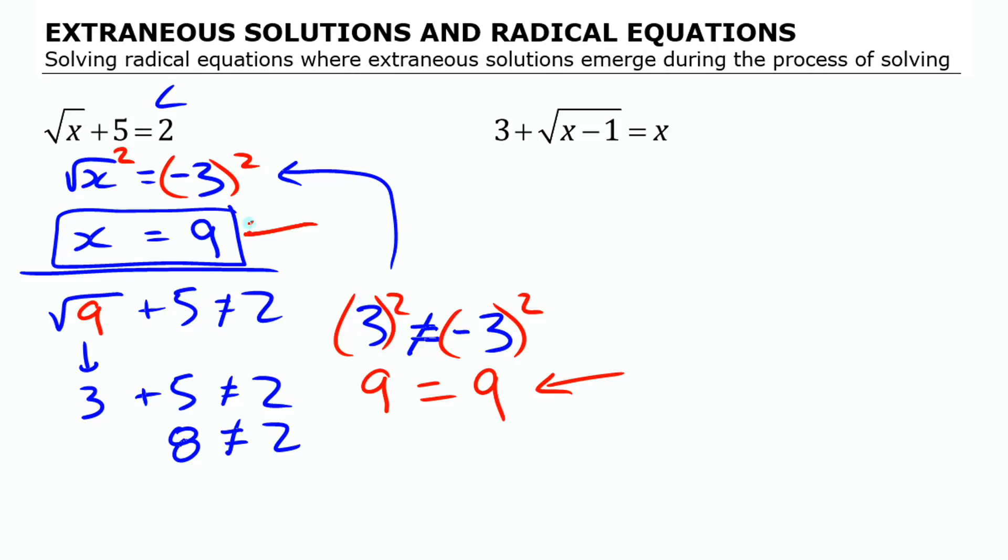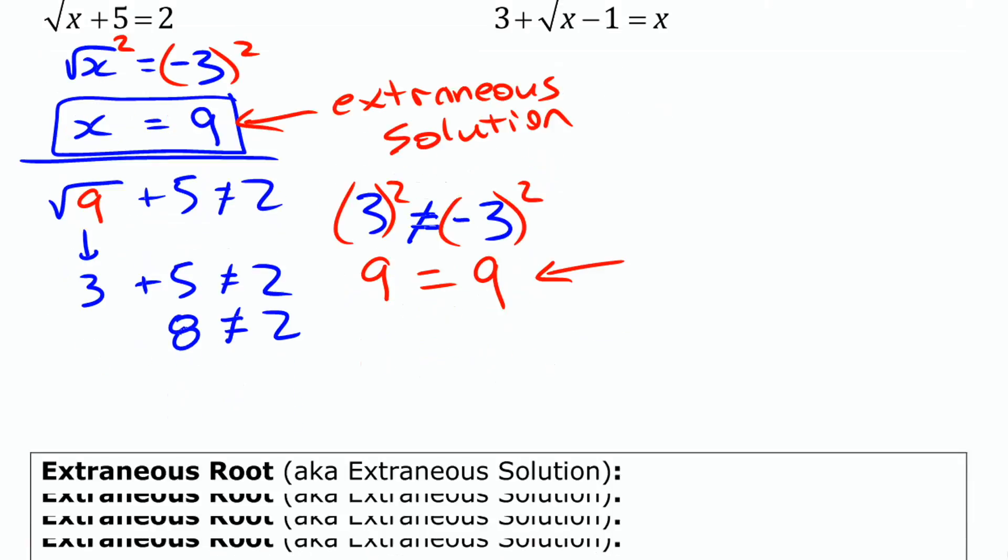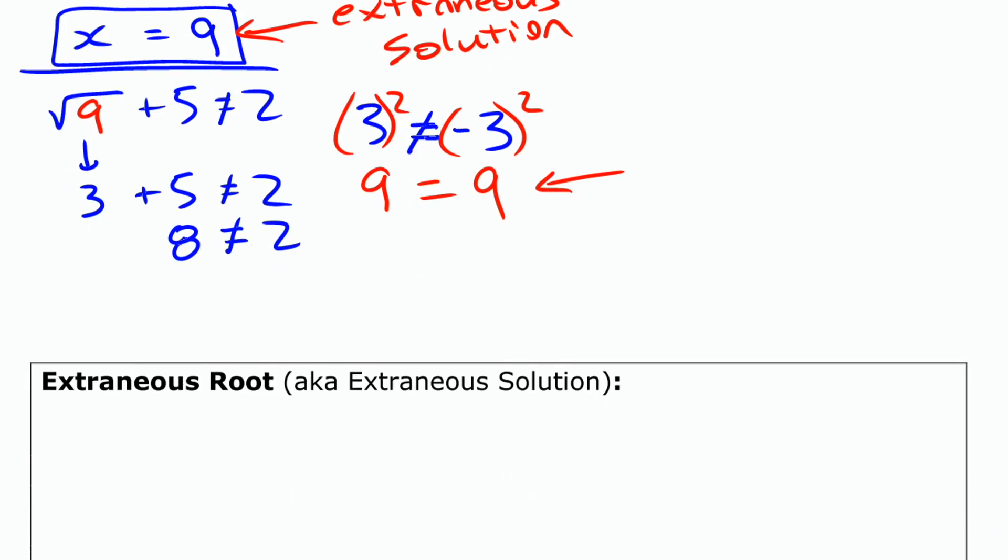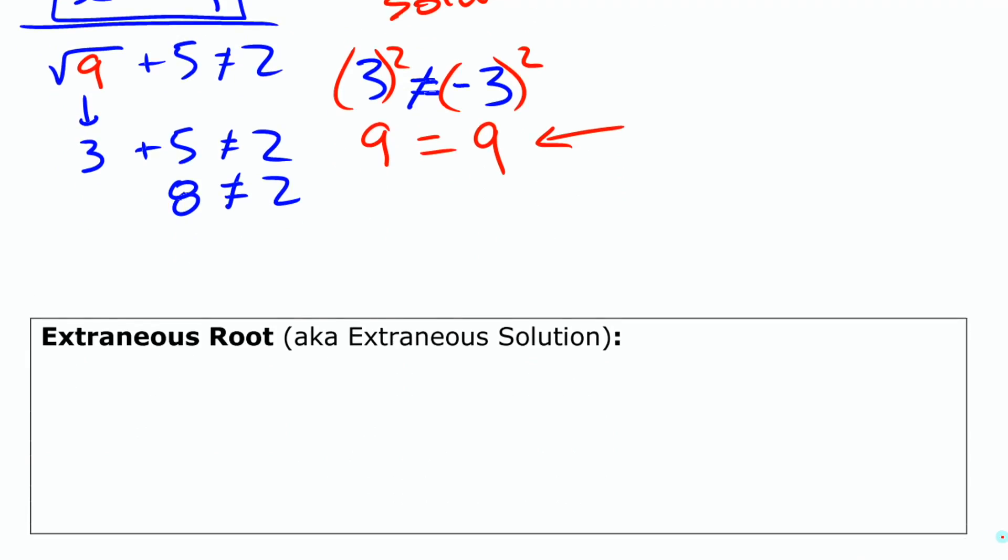This is called an extraneous solution. You can also call it an extraneous root. An extraneous solution is one that emerges from the process of solving, but isn't actually a valid solution to the original equation.